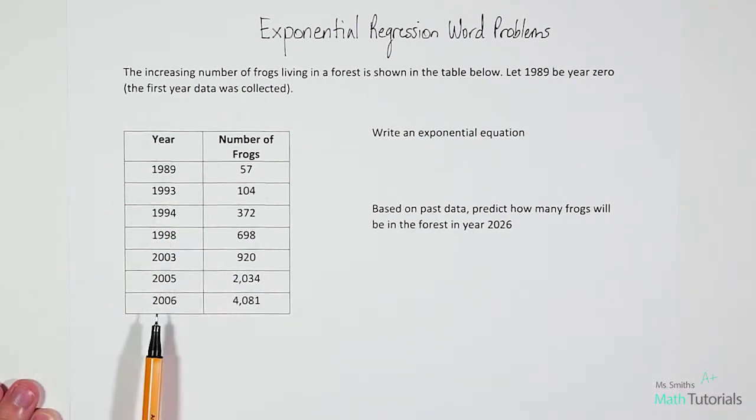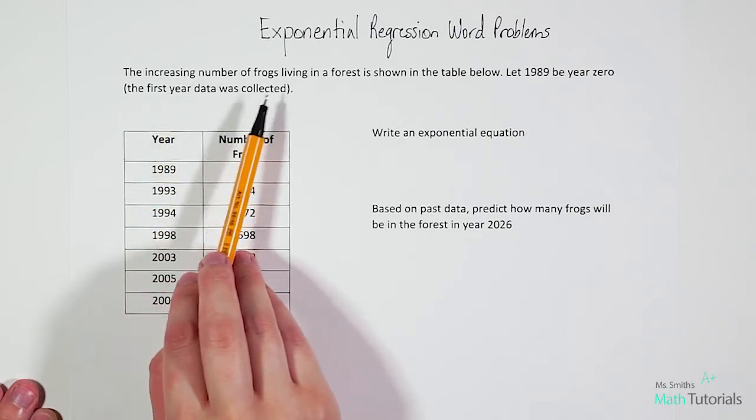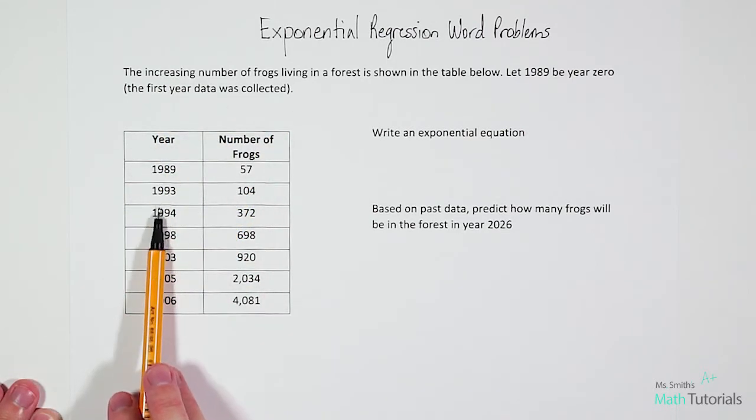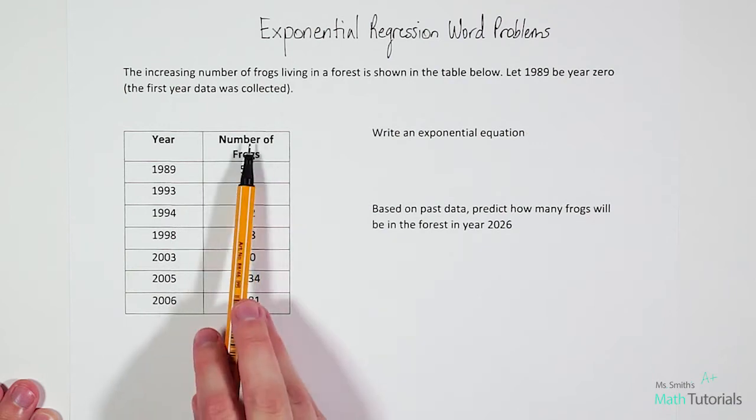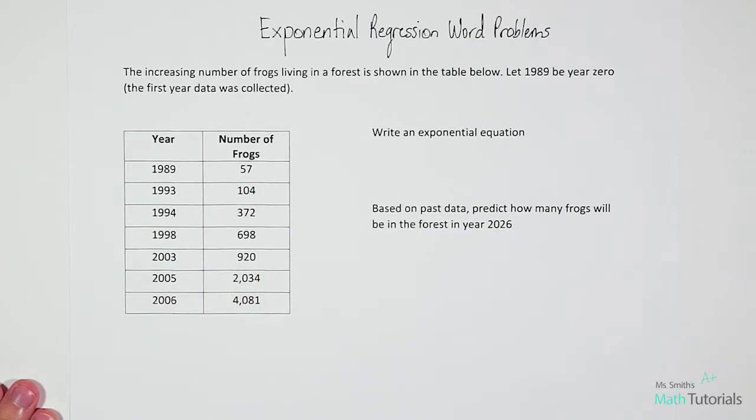Let's look at this data real quick. For each year that passes by, it tells us how many frogs were in this forest. As we can see, our numbers are pretty rapidly increasing overall. The great thing about exponential regression word problems is that the calculator does most of the work for us. We just need to be able to input our data into the calculator.